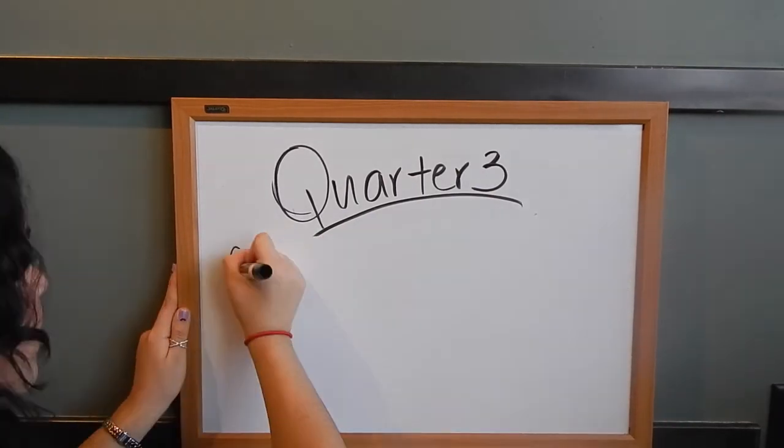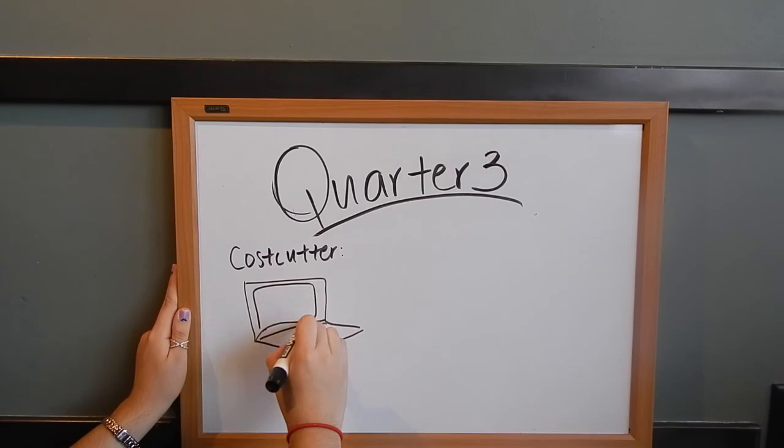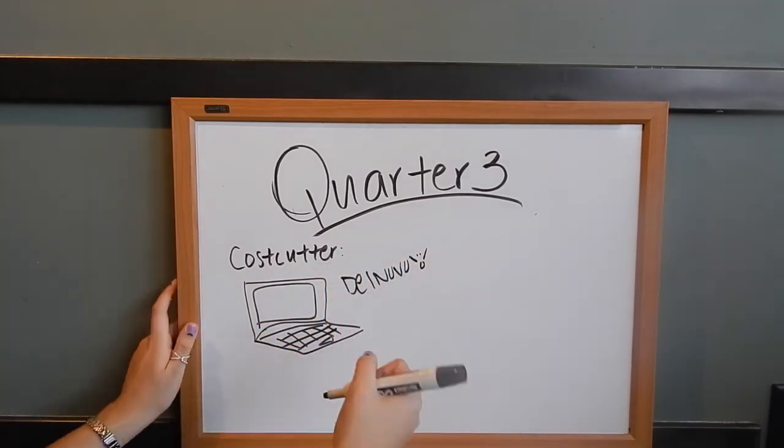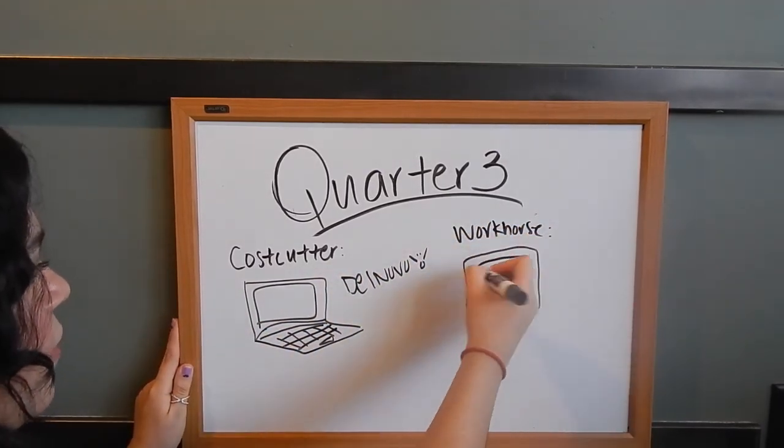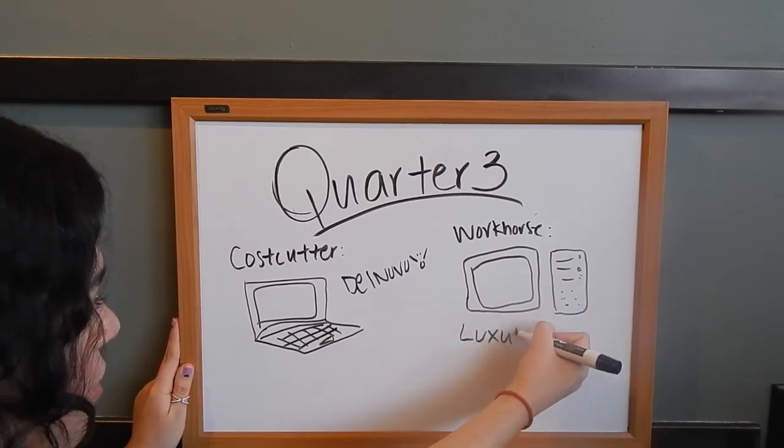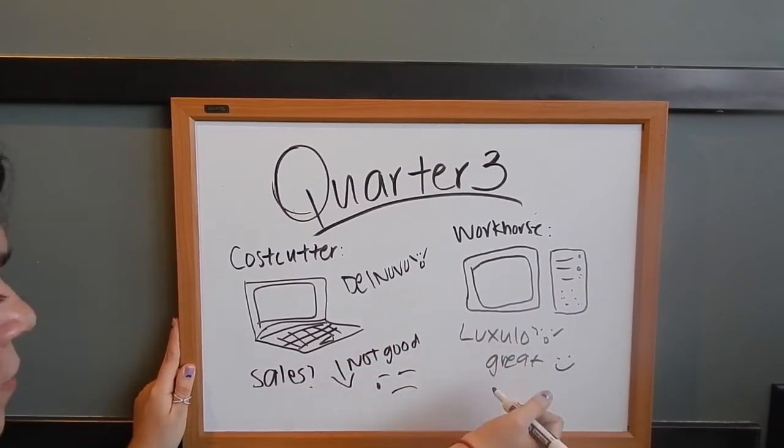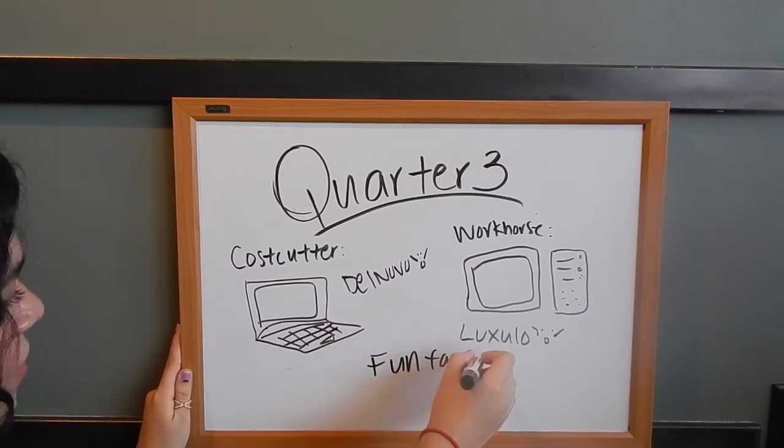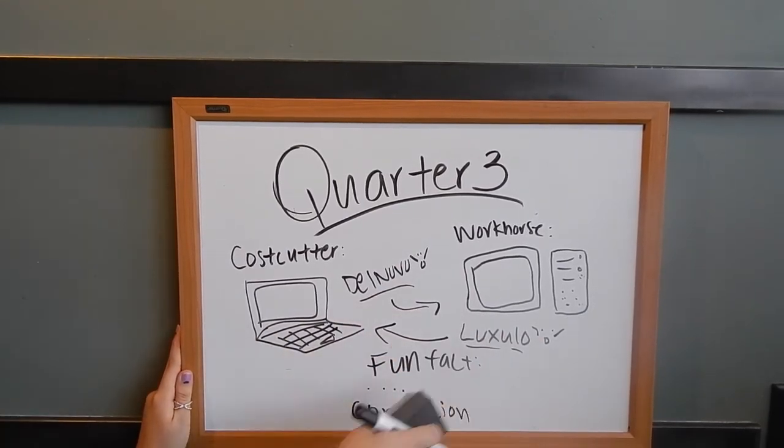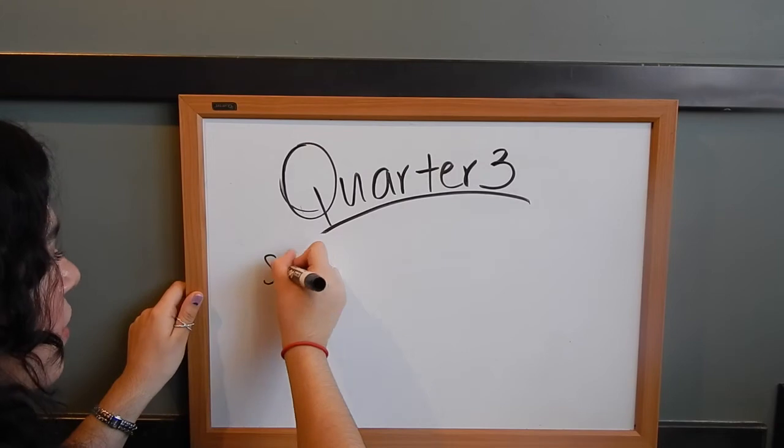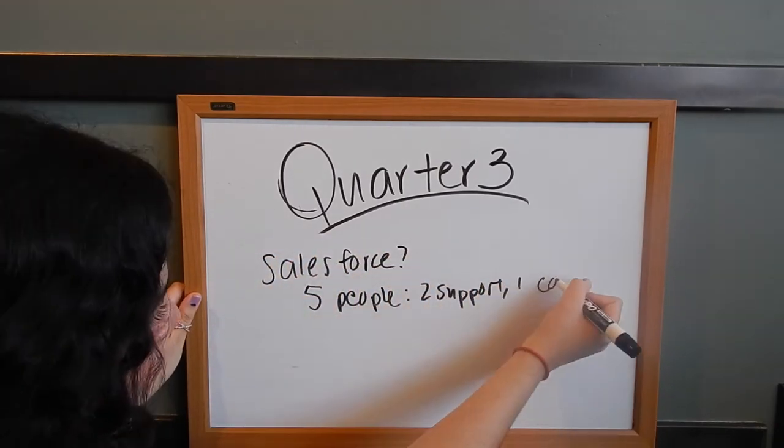We came up with two computers, Del Novo and Luxolo. Fun fact, Luxolo stands for luxury. Anyways, it was marketed for Workforce, while Del Novo was tailored for Costcutters. That clearly didn't work when we barely sold any computers for Del Novo. We had a total of five salespeople, one for support, two for Costcutter, and two for Workforce.